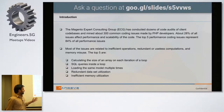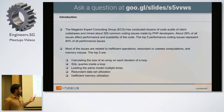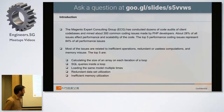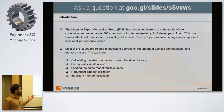The top five performance issues are: calculating the size of an array on each iteration of a loop, SQL queries inside a loop, loading the same model multiple times, insufficient dataset utilization, and insufficient memory utilization. These are the major findings identified by Magento itself.